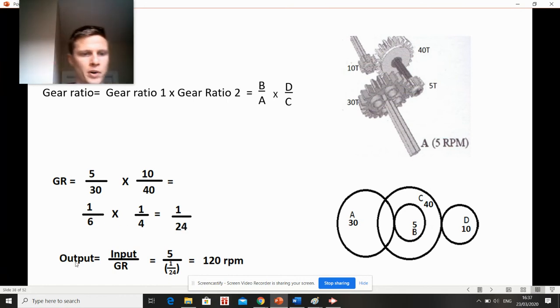Output will be your input divided by your gear ratio. Our input speed here is turning at 5 rpm, so we divide 5 by 1 over 24, which gives us 120 rpm.